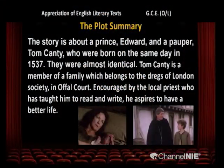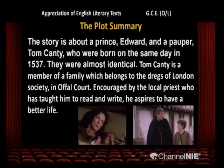Now we are going to study the plot summary. The story is about a prince, Edward, and a pauper, Tom Canty, who were born on the same day in 1537. They were almost identical — they look alike. Tom Canty is a member of a family which belongs to the dregs of London society in Offal Court.